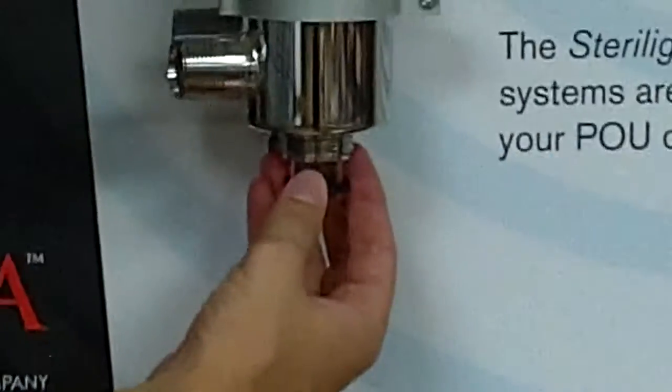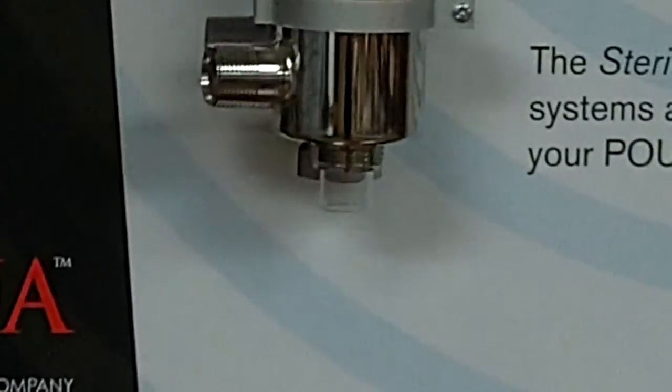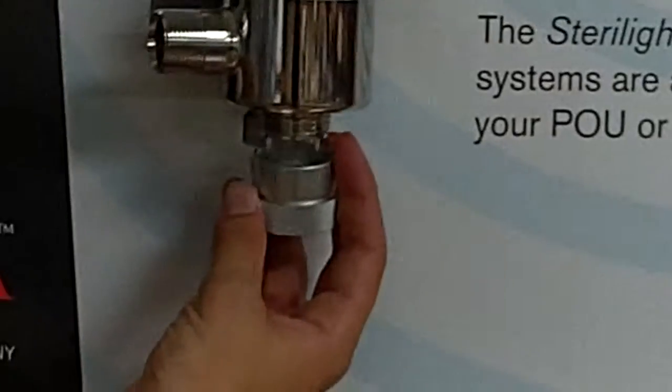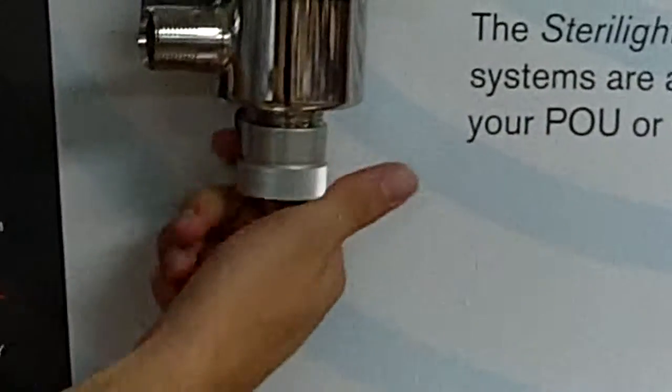Now you will want to have a bucket underneath you when you're doing this because this will release some water and you don't want it to get everywhere. And then with that o-ring off, we're just going to put this cap back on to make sure the sleeve doesn't fall out.